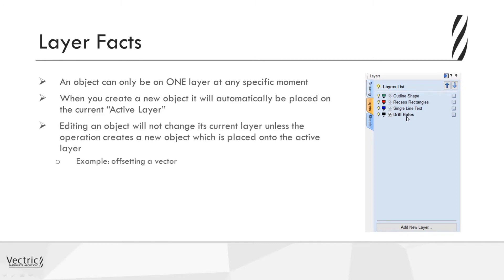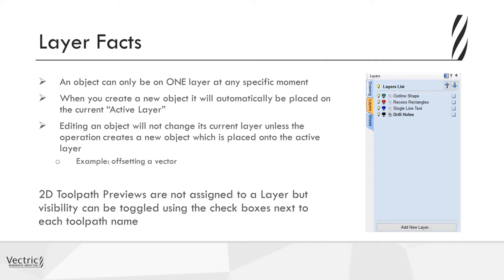Editing an object will not change its current layer, unless the operation creates a new object, which is placed onto the active layer. For example, if a vector is on layer one and the active layer is layer two, offsetting that vector will create the new offset vector onto the active layer. Also, 2D toolpath previews are not assigned to a layer, but their visibility can be toggled using the checkboxes next to each toolpath name in the toolpath tab.